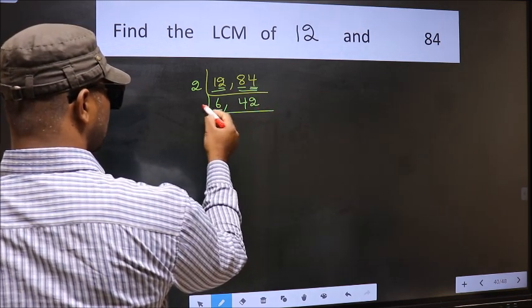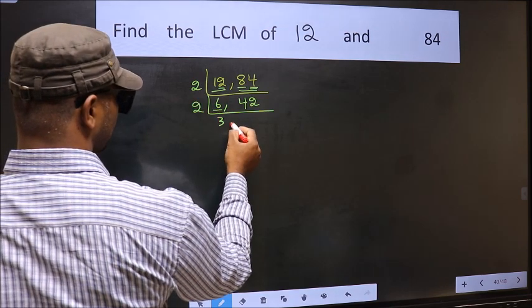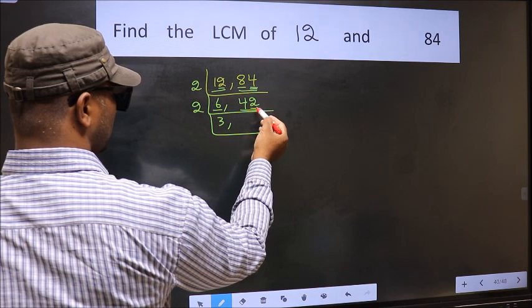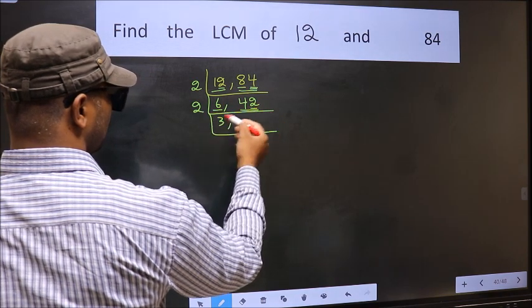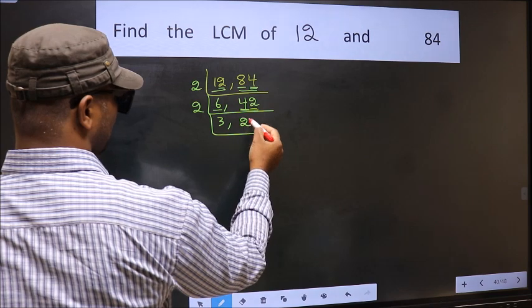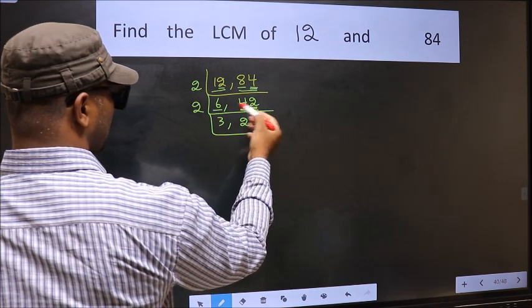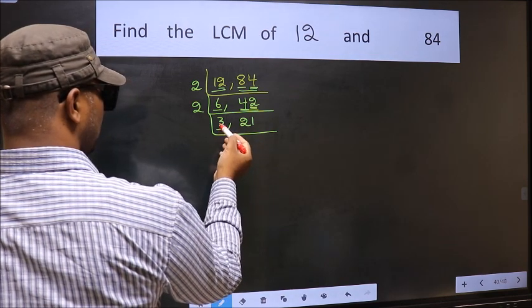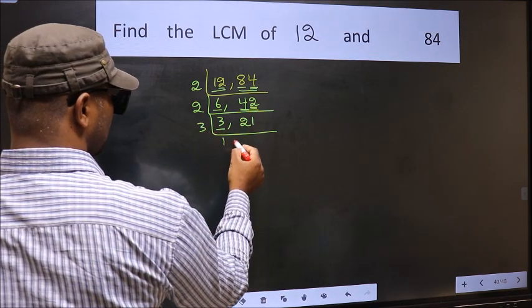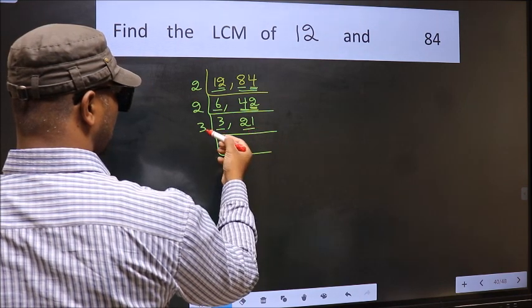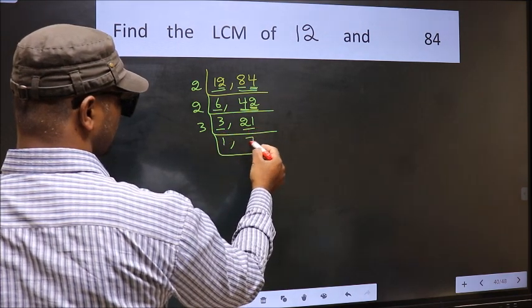Now here we have 6. 6 is 2 times 3. The other number 42, last digit 2 is even, so this is divisible by 2. 2 times 21 is 42. Now here we have 3. 3 is a prime number, so 3 times 1 is 3. The other number 21, 3 times 7 is 21.